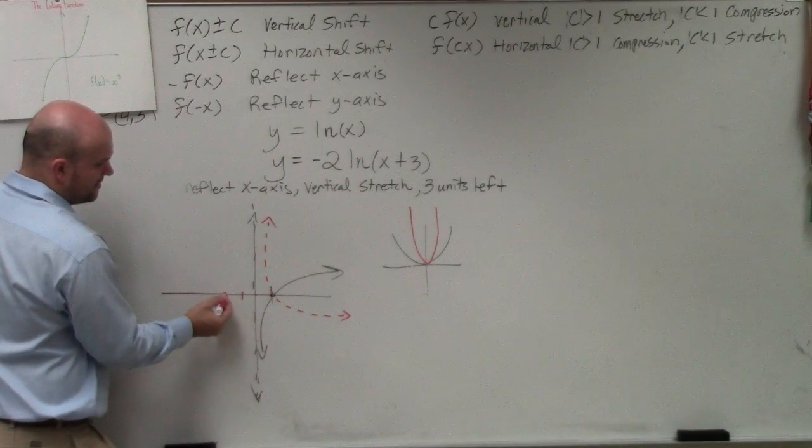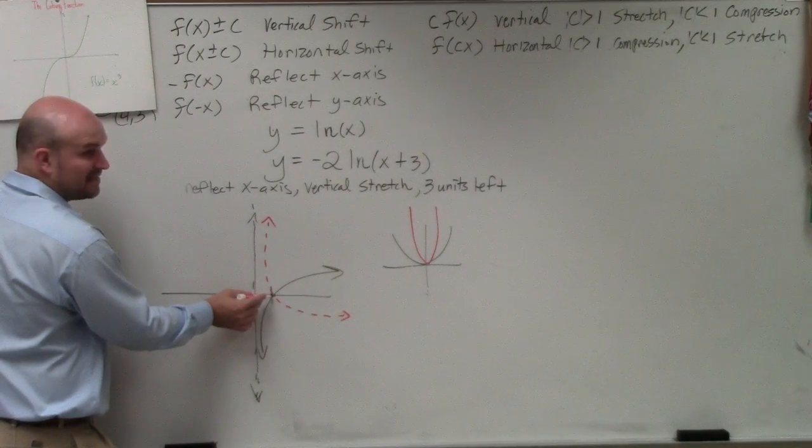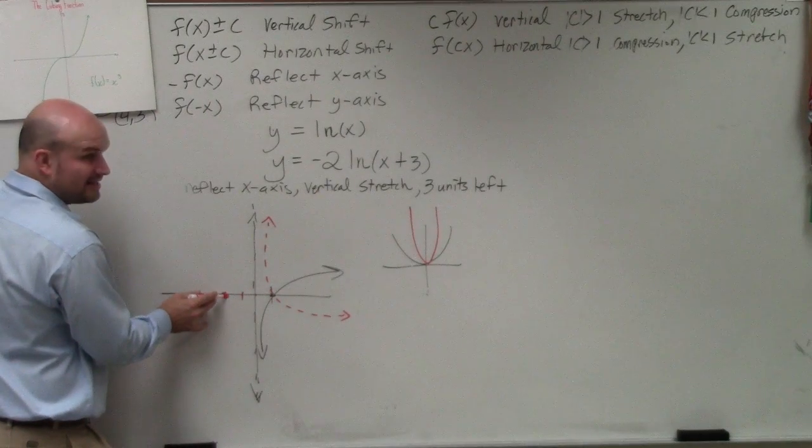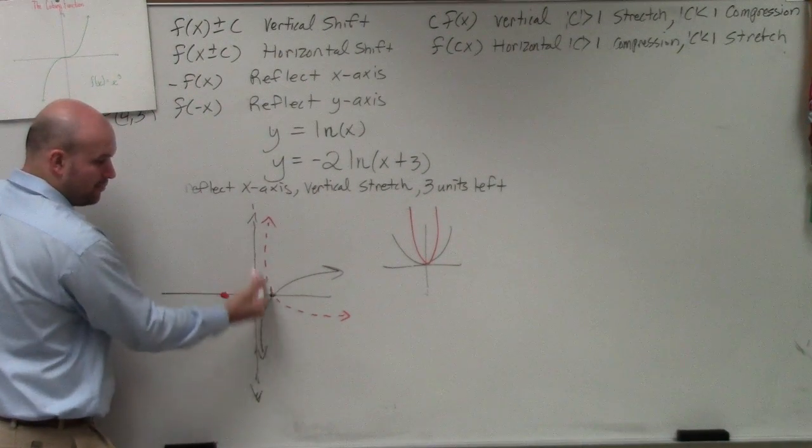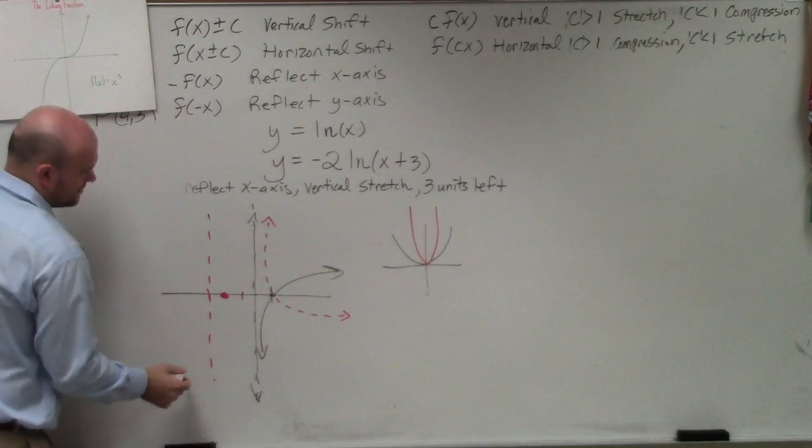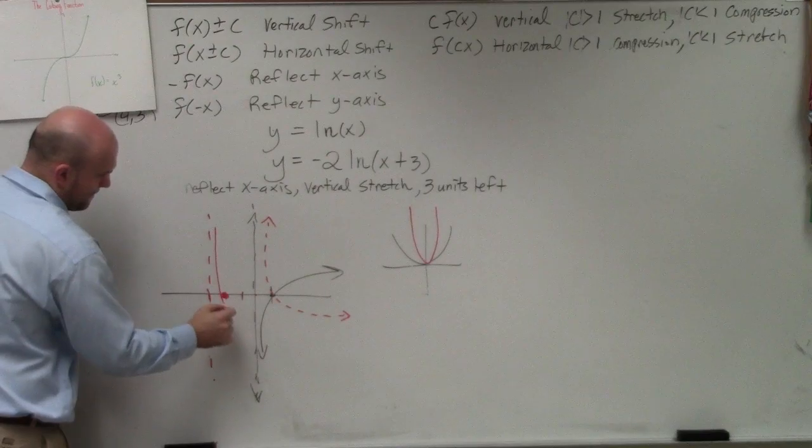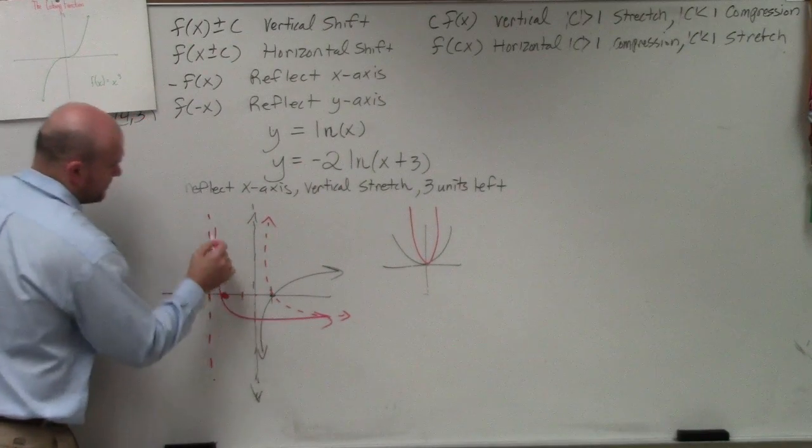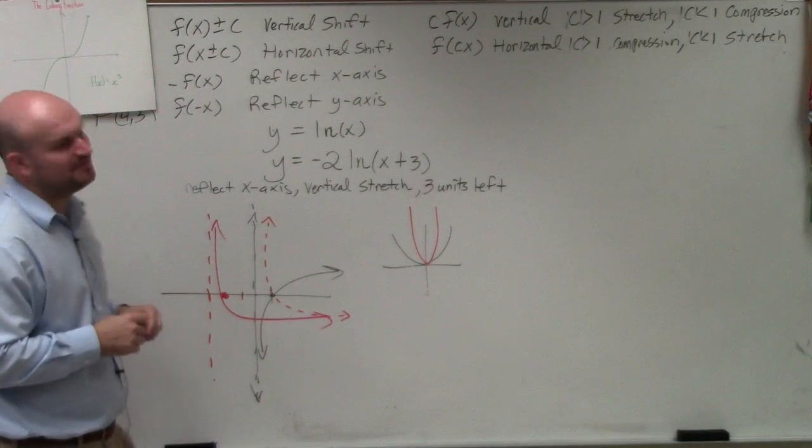One, two, three. So my x-intercept, instead of it being at 1 comma 0, is now at negative 2 comma 0. And my asymptote, which was at x equals 0, is now right here. So my graph would look something like that.